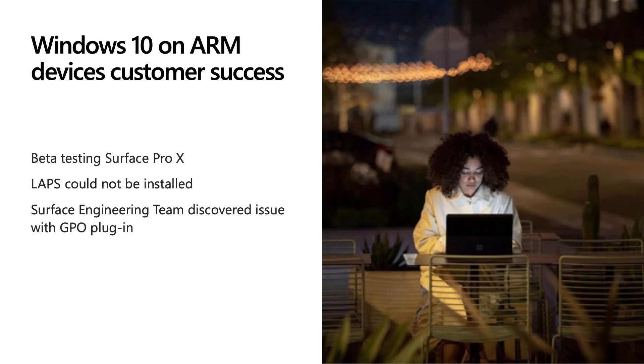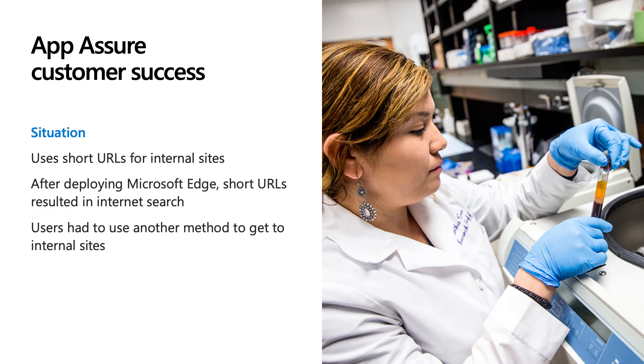Here's a customer success story. We recently helped a customer beta testing the Surface Pro X before rolling out 18,000 devices company-wide. They discovered that the Microsoft Local Administrator Password Solution, or LAPS, could not be installed. Since LAPS is used to manage passwords, this blocked their testing efforts. Partnering with the Surface Engineering team, our engineers discovered the installation issue was related to a GPO plugin that was incompatible with ARM processors. We recompiled the application to be ARM native and the customer's testing was successfully unblocked.